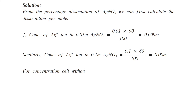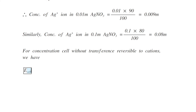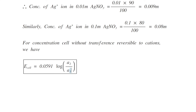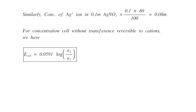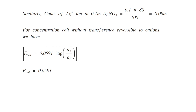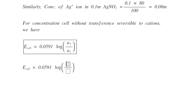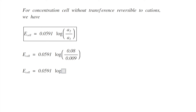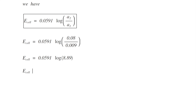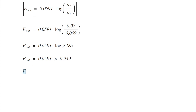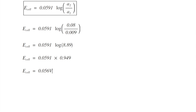For a concentration cell without transference reversible to cation: E_cell = 0.0591 log(A2/A1). Substituting the silver ion concentrations: E_cell = 0.0591 log(0.08/0.009) = 0.0591 log(8.89). Taking the logarithm: E_cell = 0.0591 × 0.949, giving a final EMF of 0.056 volts.